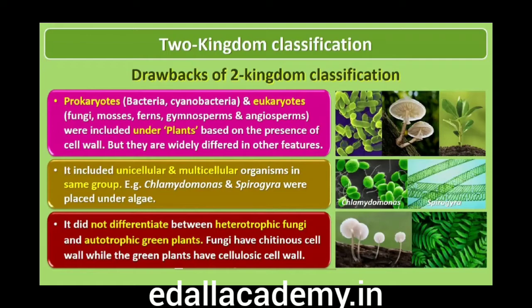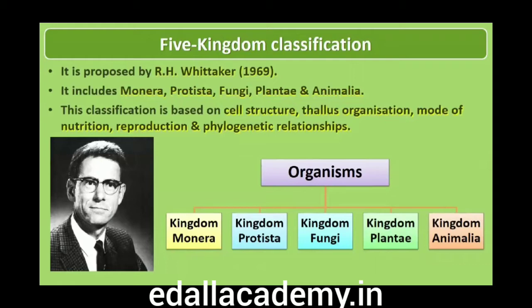R. H. Whittaker (1969) proposed a five-kingdom classification. The kingdoms defined by him were named Monera, Protista, Fungi, Plantae and Animalia. The main criteria for classification used by him include cell structure, thallus organization, mode of nutrition, reproduction and phylogenetic relationships. Listen carefully to a comparative account of different characteristics of the five kingdoms.